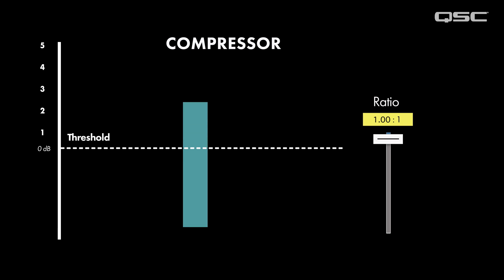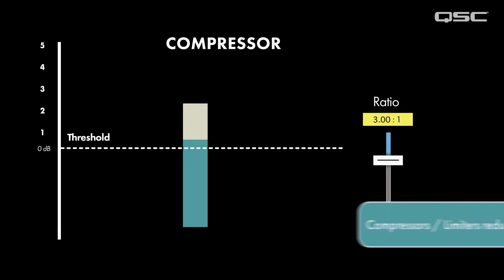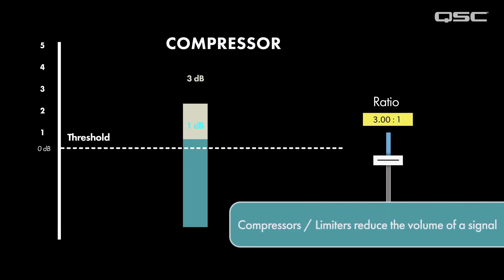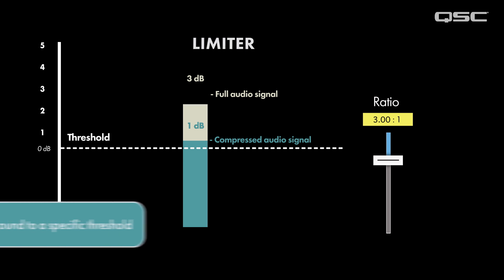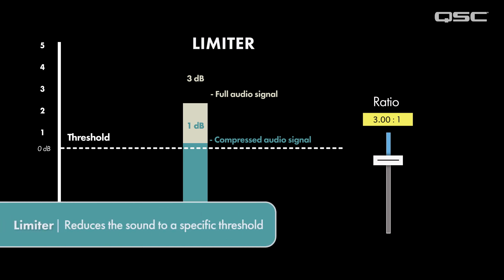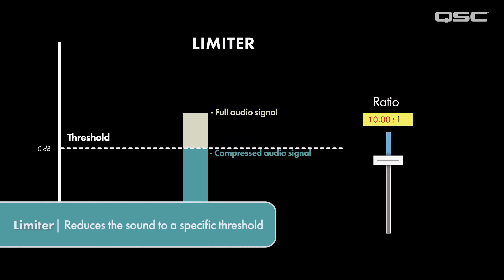First, let's mention that compressors and limiters are very similar. Both compressors and limiters reduce the volume of a signal passing through them, but the goal is different. The goal of a limiter is to reduce the volume of a sound until a specified threshold, so that it doesn't clip.